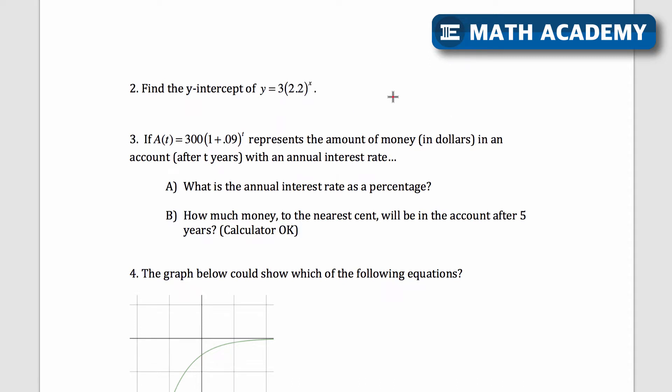Well, the y-intercept for any function will be where that function crosses the y-axis right there. And we know that x is always 0 where it crosses the y-axis. So all I have to do is put in 0 for x right here. 2.2 to the power of 0 is 1. So y equals 3 times 1. The y-intercept would be 3.